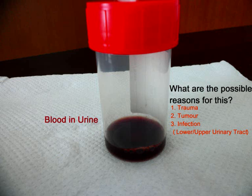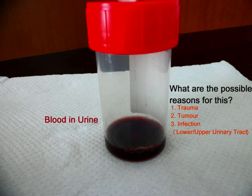Last week, a male Maltese was brought in for having blood in the urine, and this was the urine sample collected. There are a few possibilities as to why blood is present in the urine. One, it could be due to trauma — a trauma injury to the bladder or even to the kidneys. Secondly, there may be an infection somewhere along the urinary tract. Lastly, it could be a tumour within the urinary tract. Therefore, in order to determine the cause, further examination had to be done.